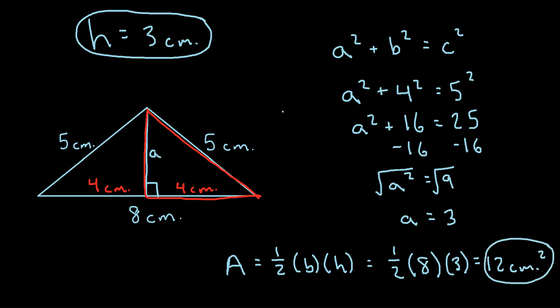So that's how you can find the height of an isosceles triangle, and then how you can use that height to then find the area of the triangle.